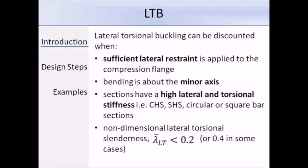There are a number of cases when LTB can be discounted, and in those cases you should simply refer to the restrained beam section. That's when sufficient lateral restraint is applied to the compression flange, and I'll talk about that in more detail in the next slide. Since LTB occurs about the major axis, there is no need to consider it if bending occurs about the minor axis. And some sections have high lateral and torsional stiffness. Examples include circular hollow sections, square hollow sections, or circular or square bar sections. Another case when LTB can be discounted is when the non-dimensional lateral torsional slenderness lambda bar LTB is less than 0.2. The equation to calculate lambda bar LTB is given later on in the design steps section of this presentation, and for quick reference, it's equation 6.56 in Eurocode 3, Part 1-1.